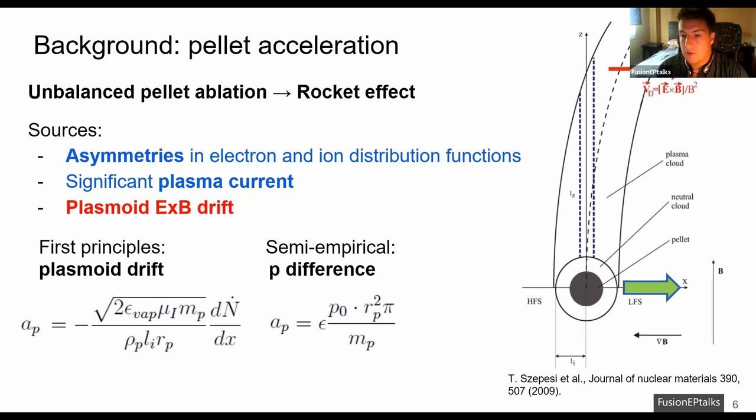In contrast, if we have high-field side injections, this process will be reversed and the pellet will be pushed towards the plasma core. Since this is very interesting for a fusion reactor, two main models have been developed to calculate the pellet acceleration according to these two formulas. The first principle model which believes that the source is indeed the plasmoid drift and the semi-empirical model which introduces an asymmetry, a pressure asymmetry as a source of this acceleration.